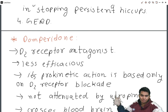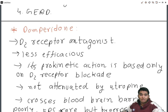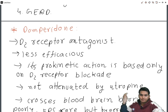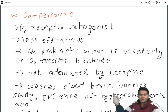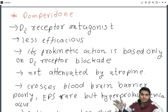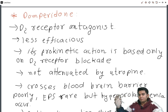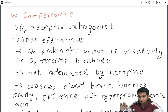Another drug is domperidone, which is also a D2 receptor antagonist. It is less efficacious than metoclopramide, and its prokinetic action is based only on D2 receptor blockade. It has no effect on 5-HT4 or 5-HT3 receptors and is not attenuated by atropine, because it has no role in acetylcholine release. Therefore, giving atropine will not affect its efficacy.